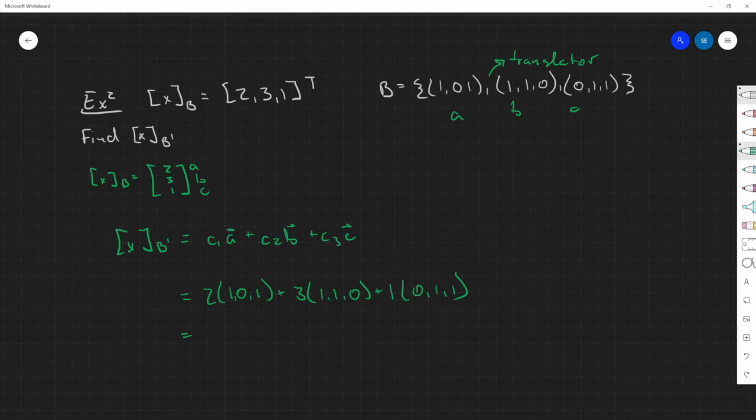Put them together, so you have 2,0,2, plus 3,3,0, then plus 0,1,1. And then you'll get your final answer as 2 plus 2 is 5, 0,3,4, and 2,0,1,3.